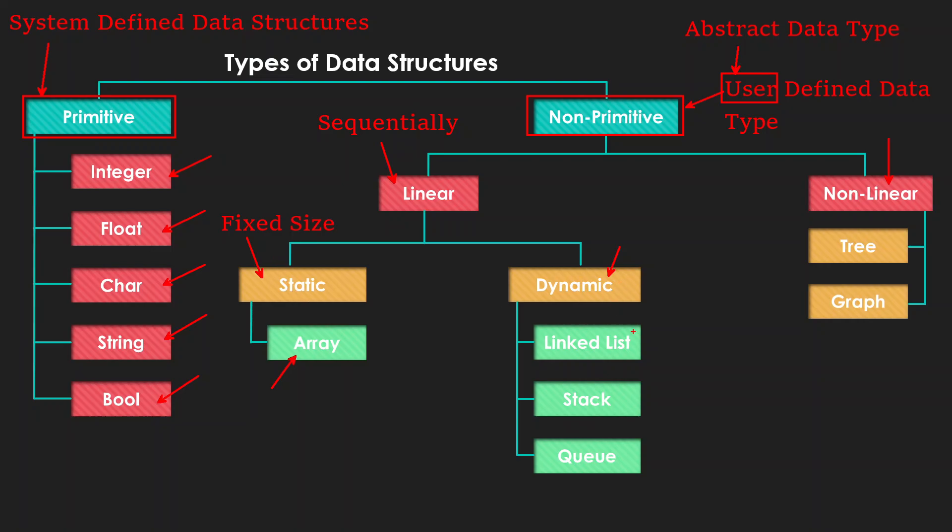On the other hand, dynamic data structures, that is non-linear, is called a tree. And a good example of a tree is what I've used here to show you about the different types of data structures. So this is an example of a tree. So a tree will have nodes and each node can have children. So you see for example, here the parent is non-primitive here. Then it has two children, linear and non-linear. Then the linear one has two children, static and dynamic. And then static has a child array. So this is an example of a non-linear data structure, it's called the tree.